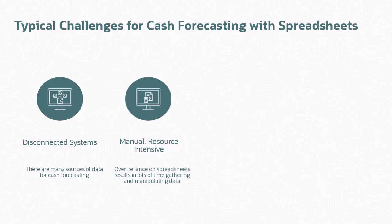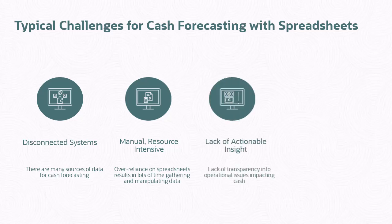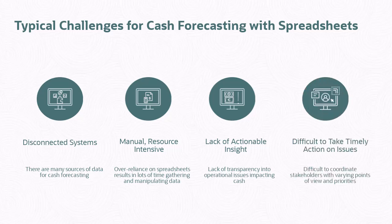Getting that information into spreadsheets is a manual and resource-intensive process. Because of the effort involved in gathering and compiling the information, cash forecasting typically is done monthly. When you have monthly information and that data is not at a very granular level of detail, there is a lack of actionable insight. This makes it difficult to take timely action on issues, since you don't know about issues when they happen, but identify those issues at the end of the month.